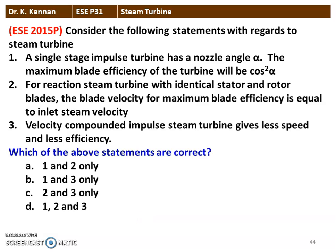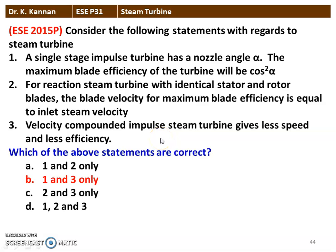The next question from the 2015 question paper — consider the following statements with regards to steam turbine. A single-stage impulse turbine has a nozzle angle alpha; the maximum blade efficiency of the turbine will be cos²α. For a reaction steam turbine with identical stator and rotor blades, the blade velocity for maximum blade efficiency is equal to the inlet steam velocity. Velocity compounded impulse steam turbine gives lesser speed and lesser efficiency. Statements 1 and 3 are correct.